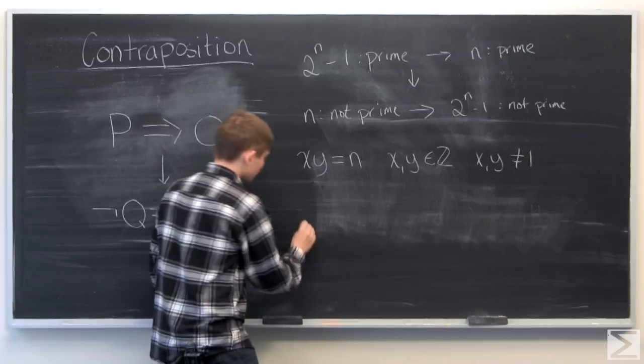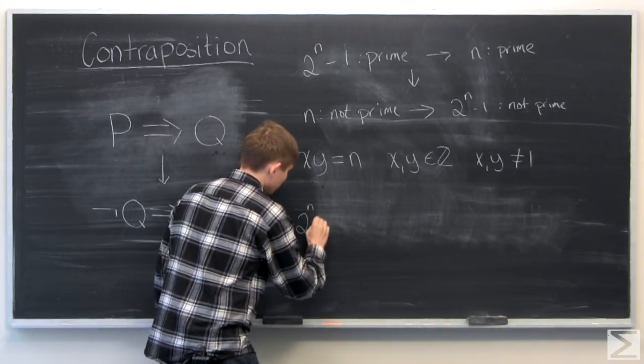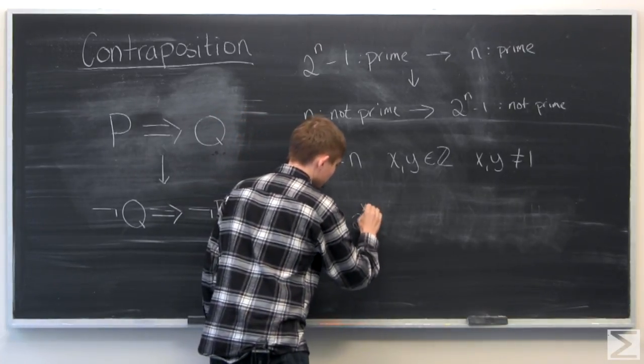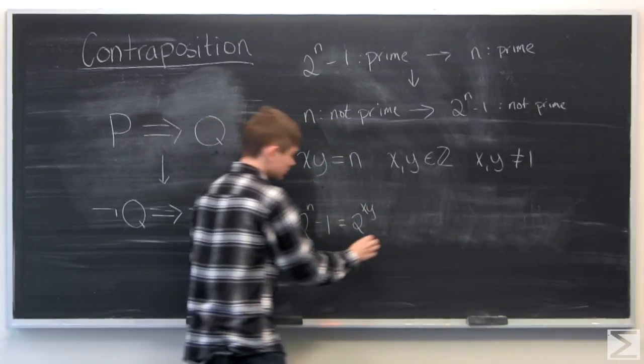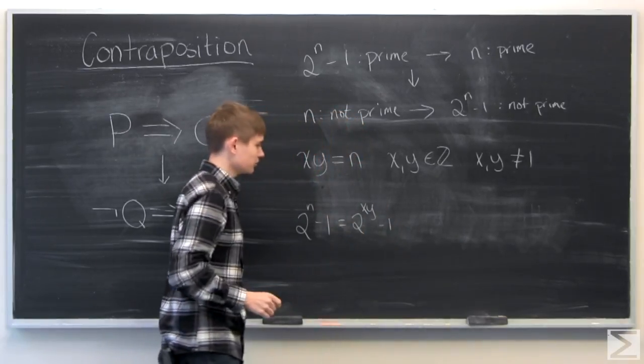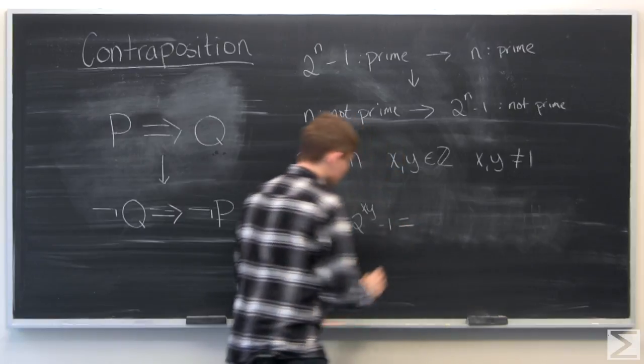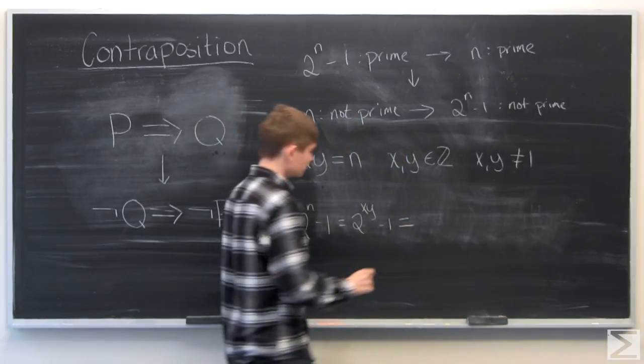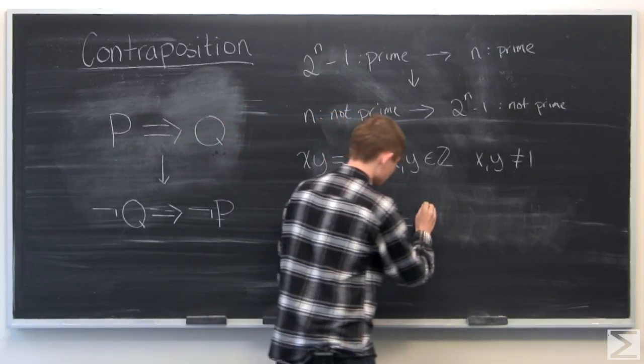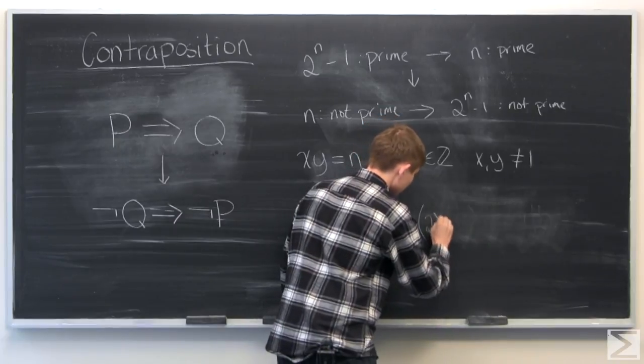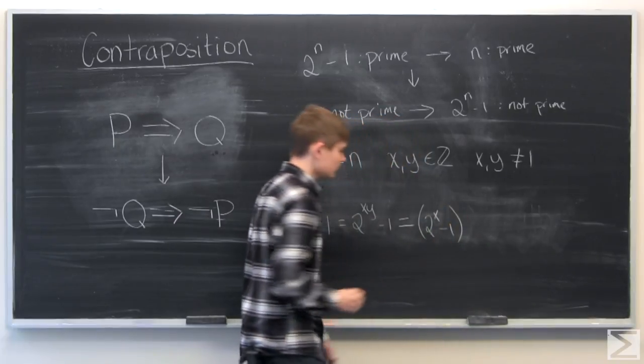Therefore, if we have 2 to the n minus 1, this is equal to 2 to the x times y minus 1, which means we can factor this slightly non-intuitively, but we can say that this is equal to 2 to the x minus 1 times...